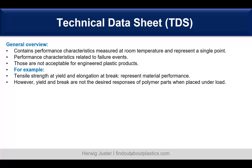So what is meant by this? For example, tensile strength at yield and elongation at break represent the material performance, and tensile strength is one of the first properties we look at. However, when you think of tensile yield and break, these are not the desired responses we want to see in polymer parts when they are used under load.